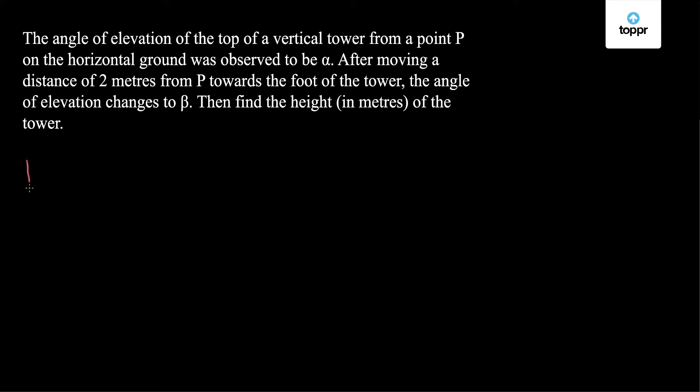We will try to picturize what has been given to us. So I have a tower here, let us say AB of height H, and I have a point P on the horizontal ground. The angle of elevation here is alpha. As I move towards the foot of the tower, towards point B, I reach a point C. So I have covered 2 meters and the angle of elevation here changes to beta.